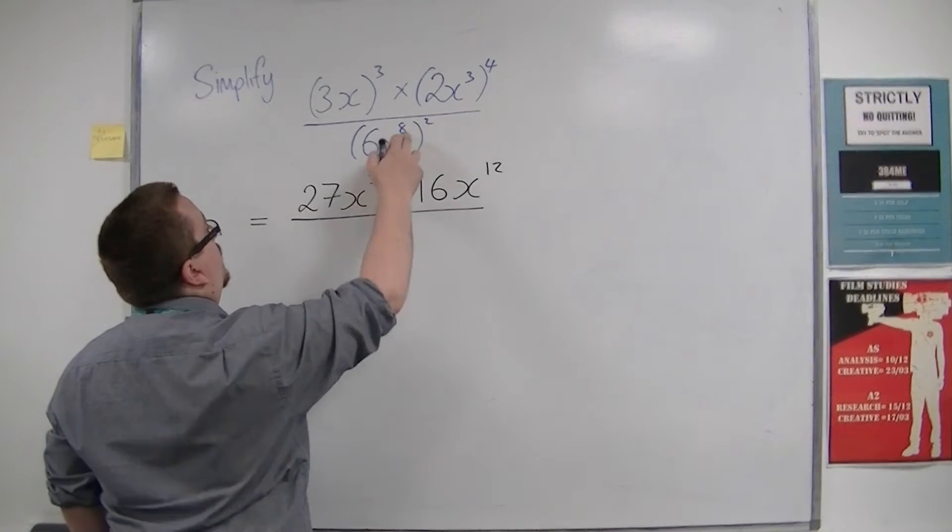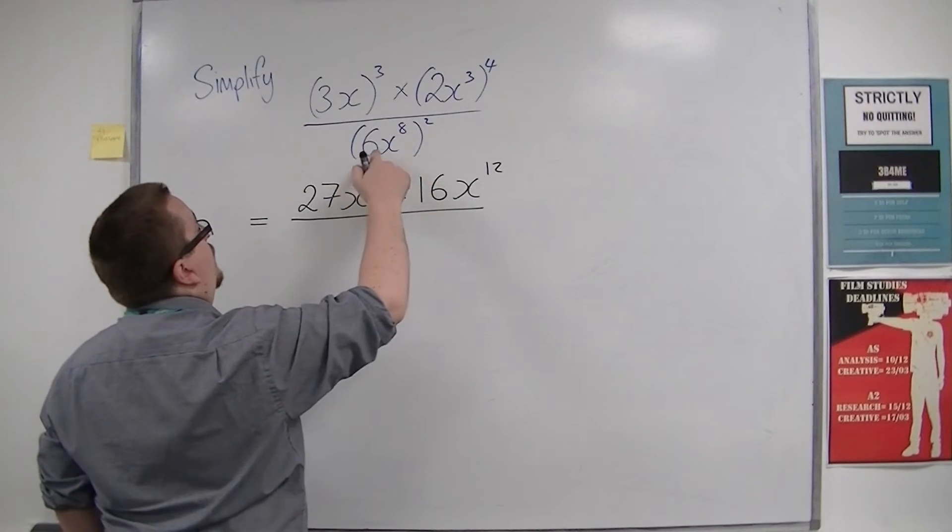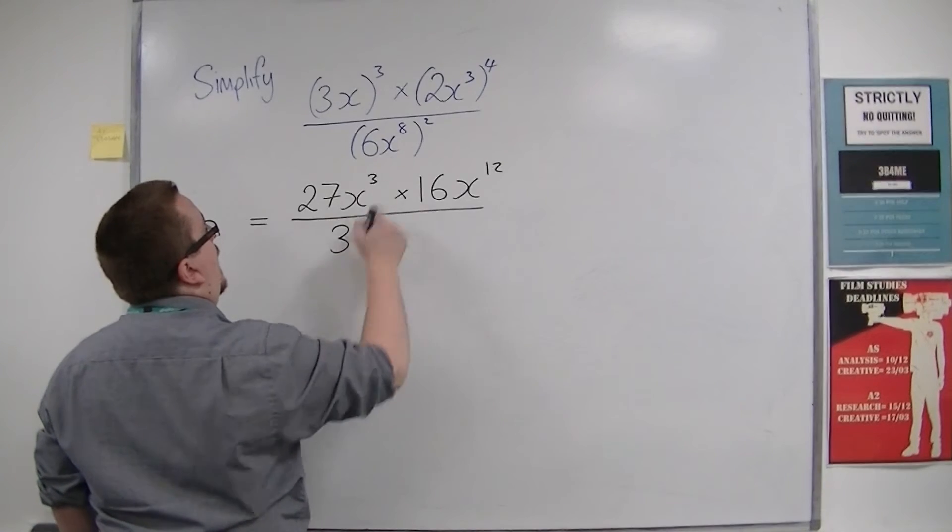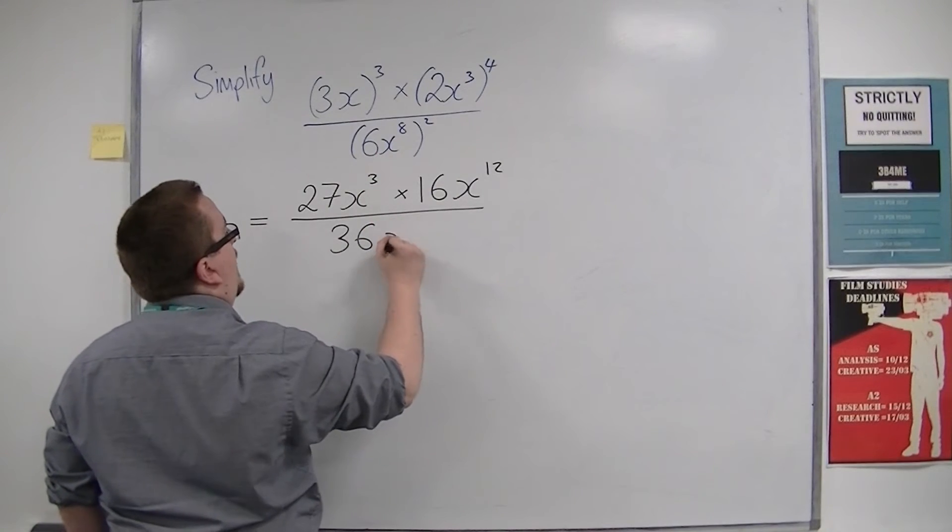Divided by 6x to the 8 squared, so 6 squared is 36, and x to the 8 all squared would be x to the 16.